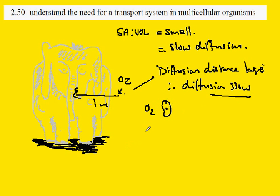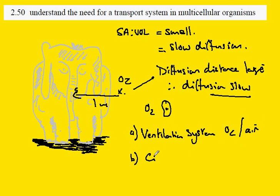And so the elephant, like many organisms, has developed transport systems such as the ventilation system to extract oxygen from the air and a circulatory system to deliver the oxygen directly to the elephant cells.